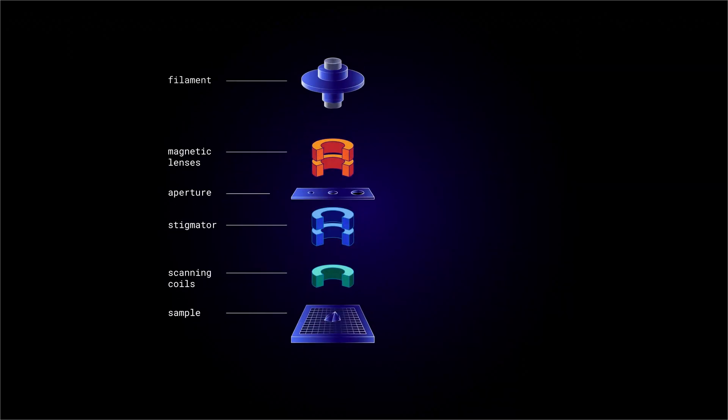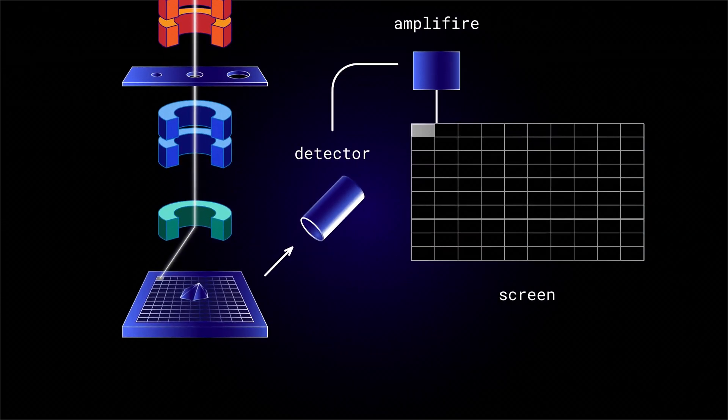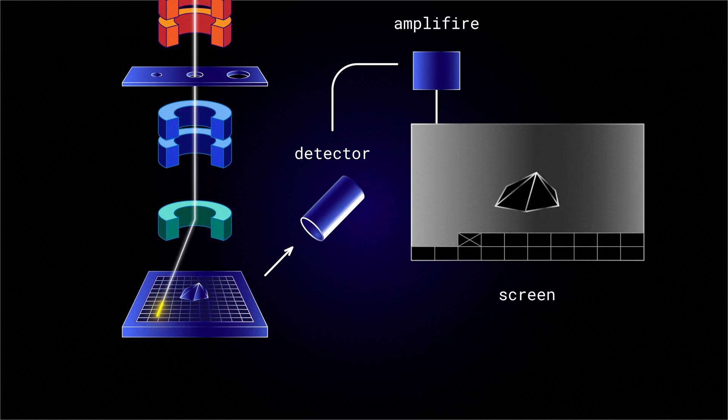There are also scanning coils that perform raster scanning by deflecting the beam to each scanning point step by step. So in a fraction of moment we receive information about only one pixel of the image. And via raster scanning we form the whole image.